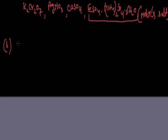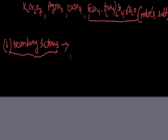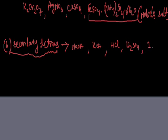The next type is secondary titrants. Secondary titrants or secondary reagents are those reagents whose solution cannot be prepared directly — their solution must be standardized for use. For example: sodium hydroxide (NaOH), potassium hydroxide (KOH), hydrochloric acid (HCl), sulfuric acid (H2SO4), iodine (I2), potassium permanganate (KMnO4). These are the common secondary titrants whose solutions cannot be prepared directly.